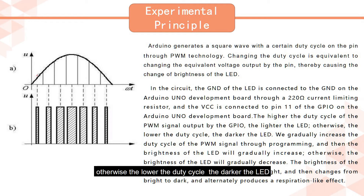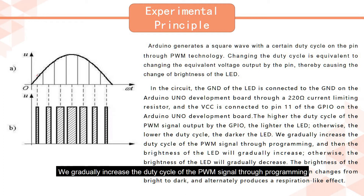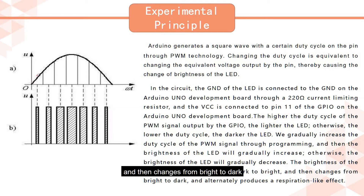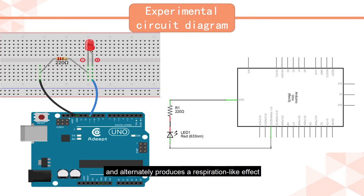Otherwise, the lower the duty cycle, the darker the LED. We gradually increase the duty cycle of the PWM signal through programming, and then the brightness of the LED will gradually increase. Otherwise, the brightness of the LED will gradually decrease. The brightness of the LED gradually changes from dark to bright and then from bright to dark, alternately producing a respiration-like effect. Now let's start making the Breathing LED.